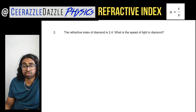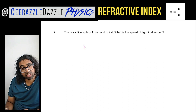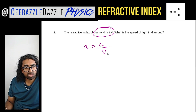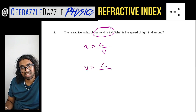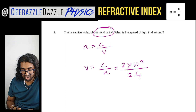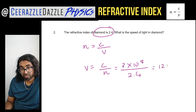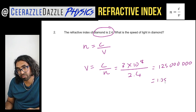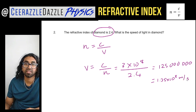Let's do another one. The refractive index of diamond is 2.4 — what is the speed of light within the diamond? n = c / v, so rearranging: v = c / n = (3 × 10⁸) / 2.4 = 1.25 × 10⁸ m/s. Easy stuff!